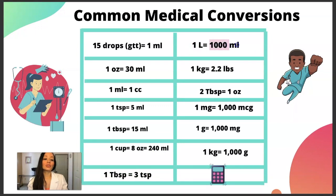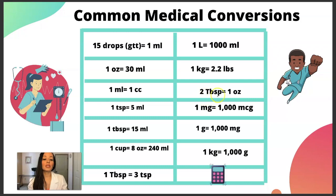One liter is equal to a thousand milliliters. With the metric system, it's simple — you just move the decimal point three places in whatever direction you're moving. One kilogram is 2.2 pounds. Two tablespoons is one ounce. One milligram is equal to a thousand micrograms. One gram is equal to a thousand milligrams. One kilogram is equal to a thousand grams.